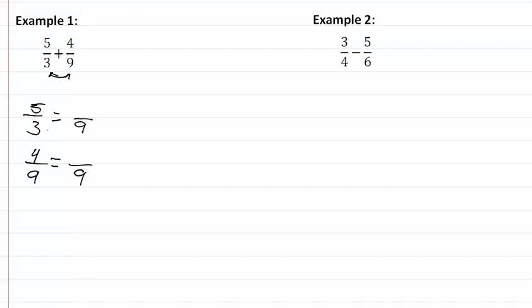With my first fraction, I need to multiply my three times three in order to get nine. That means I need to multiply my five times three also, and now I have fifteen. On my second fraction, I already have the common denominator, so I do not need to multiply by anything here. I can just go ahead and write down my four.